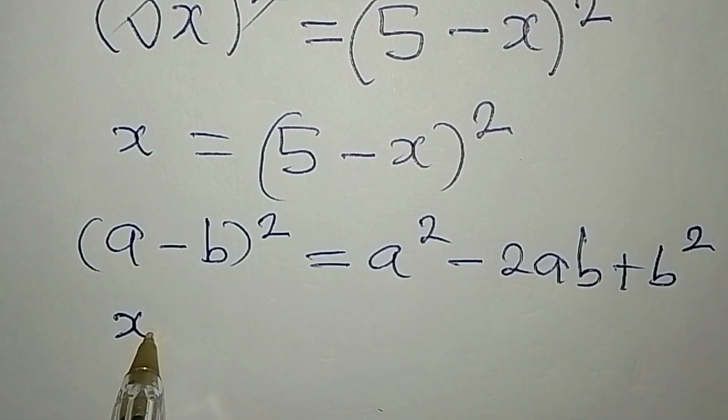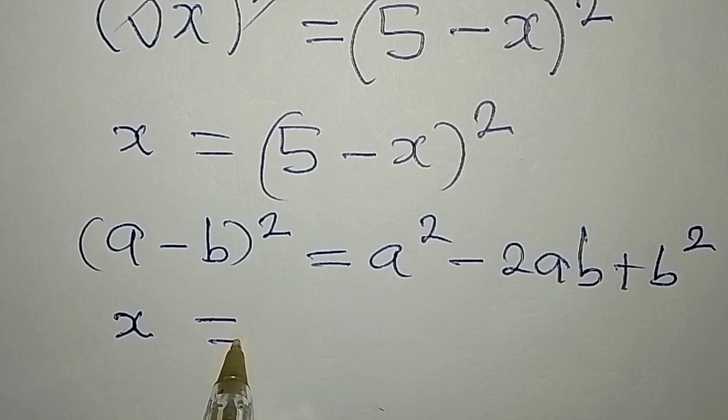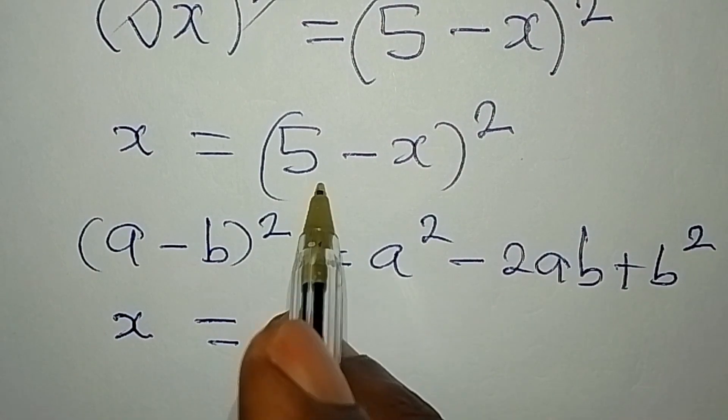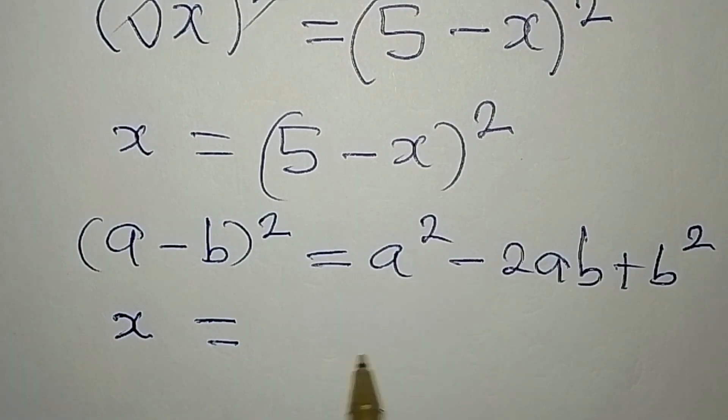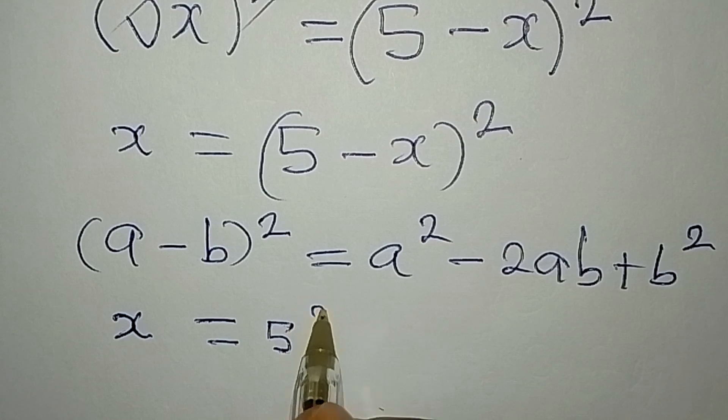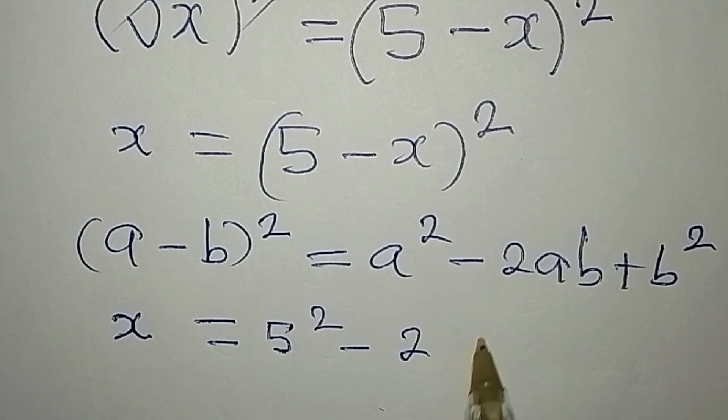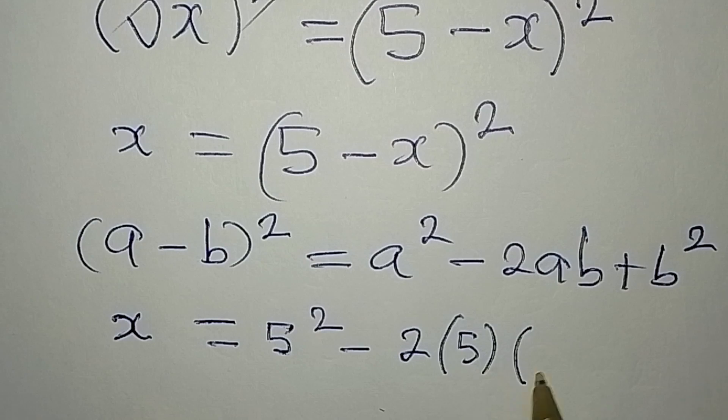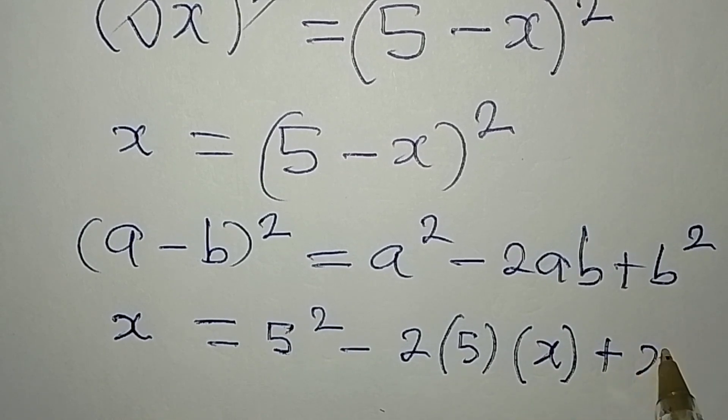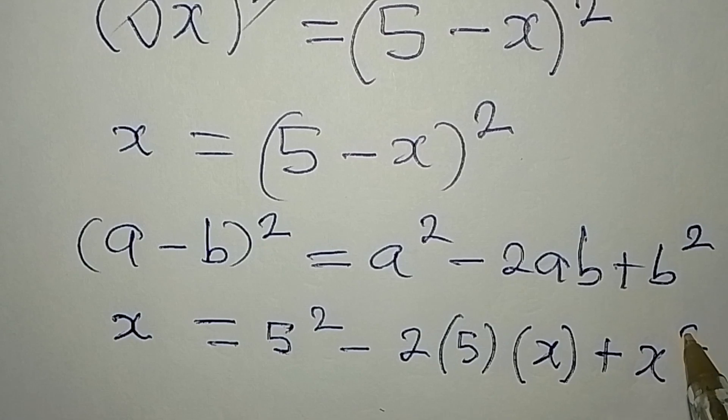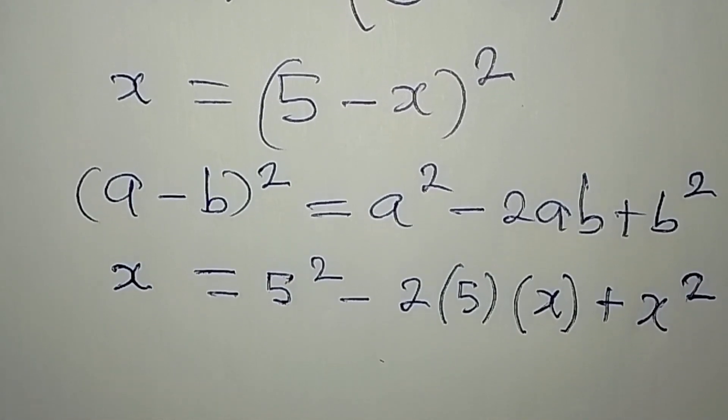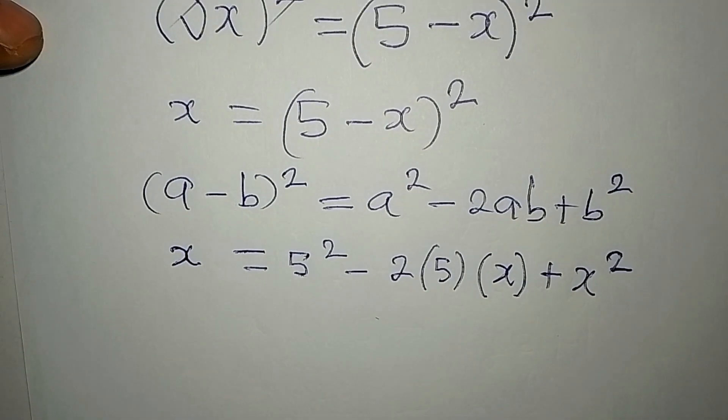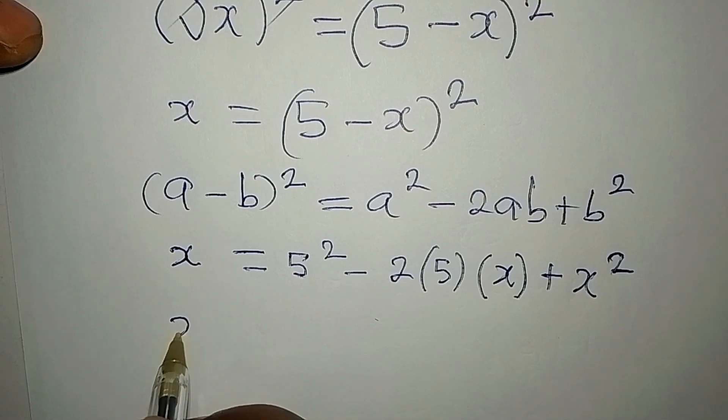Now if that is the case, then this x will come first and it will be equal to: we have 5, so in place of a squared we're having 5 squared, minus 2 multiplied by a is 5 multiplied by b and it's x, now we have plus b squared which will now be x squared.